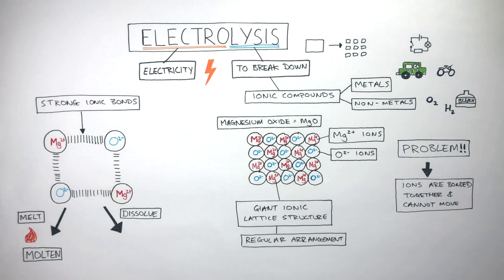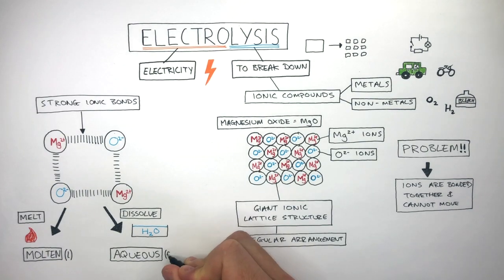Another way is to dissolve the ionic compounds in water. This forms an aqueous solution where the ionic bonds are broken without using a lot of heat energy. Just water is required. The ions are now free to move and the state symbol for molten is L in brackets and for aqueous it is AQ in brackets.